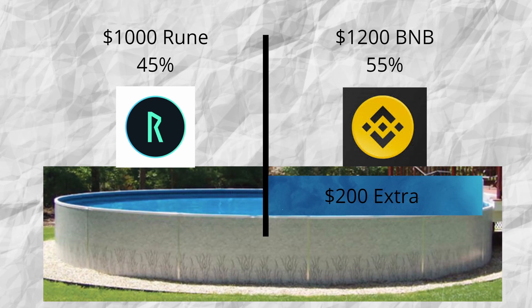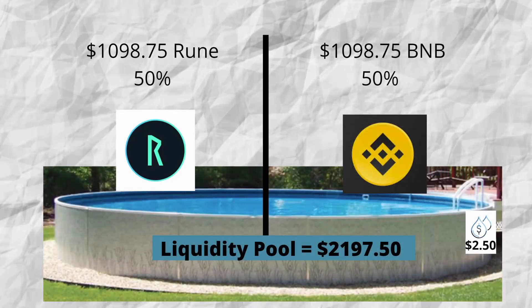So in this case, the rebalancing process will sell BNB and buy Rune to rebalance the liquidity pool back to a 50-50 split. During the rebalancing process, funds are lost — think of it like they're spilled out of the pool due to the rebalancing process. So while you may think that the new value is going to be $2,200 when the pool rebalances, it's actually less than that. And this is the impermanent loss. In our example, we lost $2.50 in the rebalancing process. It's just an example figure.